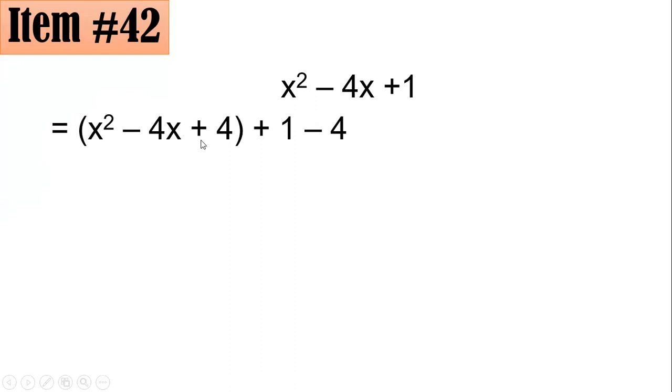So I added here plus 4 to make this x² - 4x + 4 a perfect square trinomial. But also, remember we are just dealing, we don't have an equality statement here. So for this case, to maintain the equality on this one, we have to subtract 4. Because if you could see 4 minus 4 is 0, and this will become the original one. So we did not alter the value of this. x² - 4x + 4 could be factored as (x - 2)² - 3, because 1 minus 4 is negative 3 here.